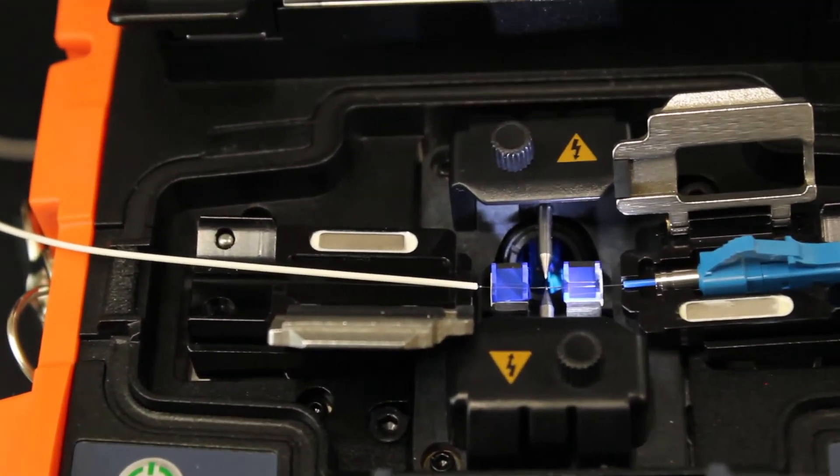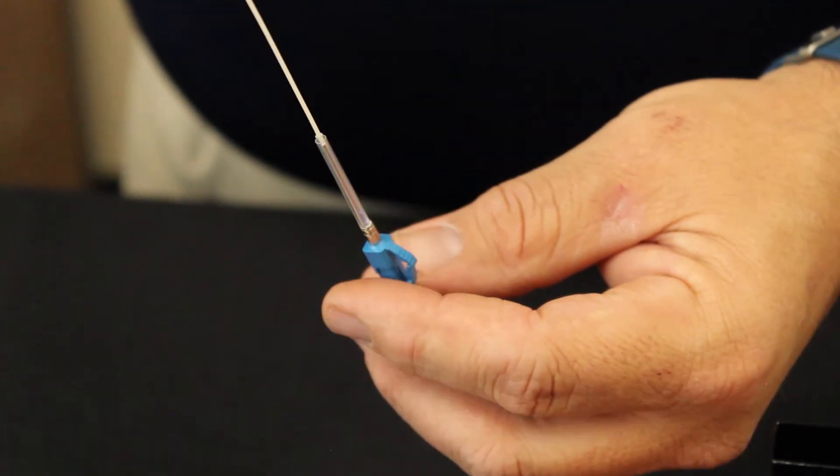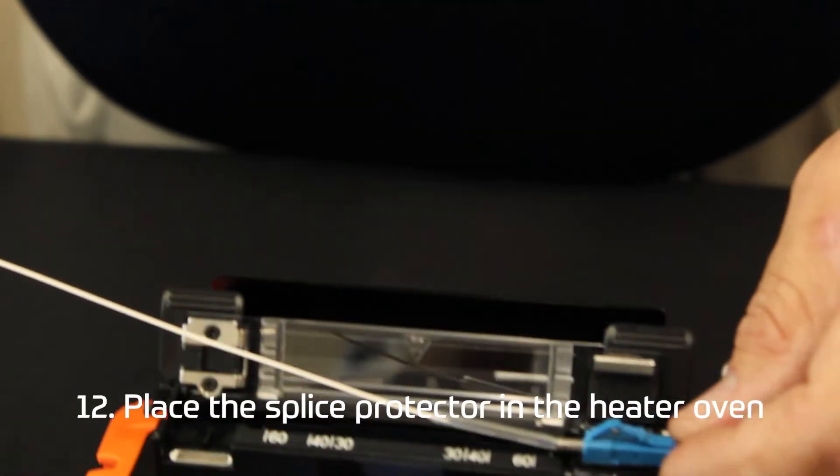Position the splice-on connector against the metal housing of the LC-connector. Place the splice-on connector in the heater-oven.